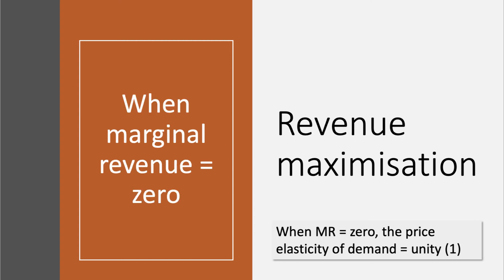One objective is Revenue Maximisation. You maximise your business revenues when Marginal Revenue is zero. When that's the case you are halfway down your demand curve and the price elasticity of demand is unity, or the coefficient is one.